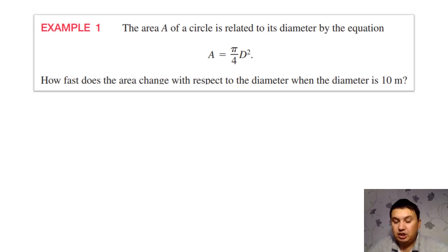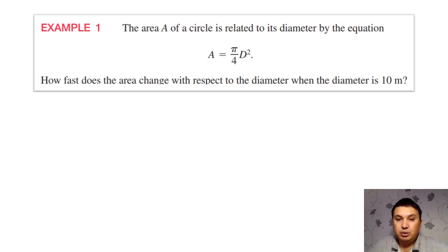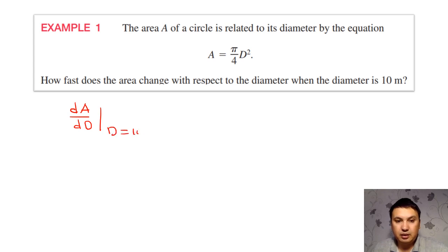So whenever it says how fast it is changing, that's exactly what is meant by rate of change. And with respect to diameter, it means I need to take the derivative of the area with respect to D. So, rephrasing the question, we would like to find the derivative of A with respect to D when D is equal to 10 meters.